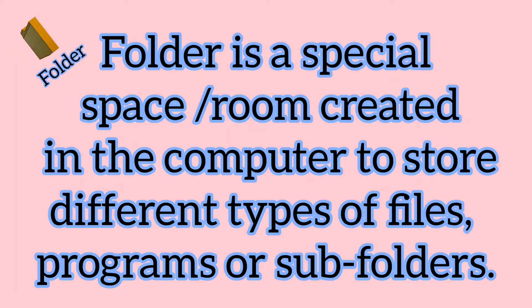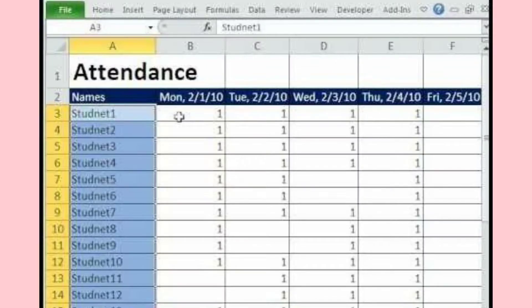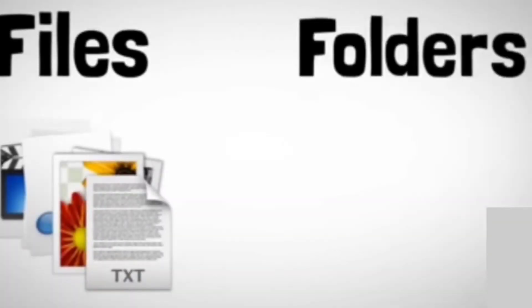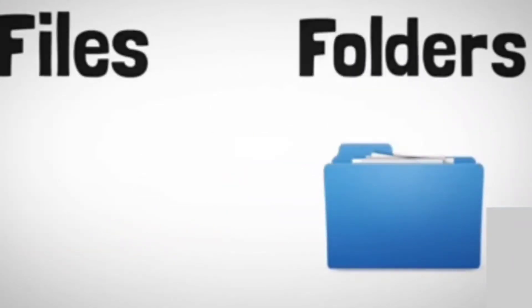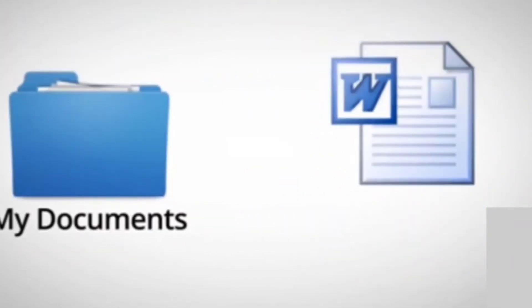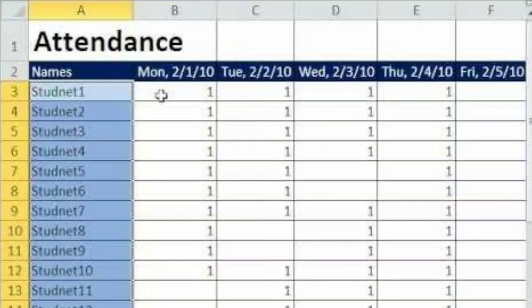For example, if a teacher wants to create a report card, she can maintain a record — she can create a file and keep that file in her folder. So whenever she wants to open her folder, she can see the record. It will be easier to create a folder and keep all the records in that folder.